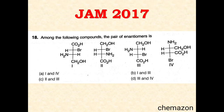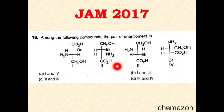Here is another question from the JAM 2017 paper: 'Among the following compounds, the pair of enantiomers is.' Four different molecules are given and you have to identify which pair are enantiomers. Let us see the solution.